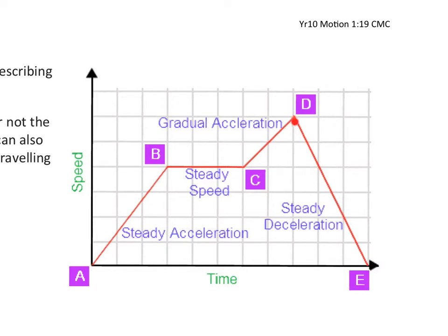And then from d all the way to e, you have an instant deceleration and the speed drops. So steady deceleration. And finally at e, we have reached the point of zero speed. So if the object has zero speed, it is effectively stopped.